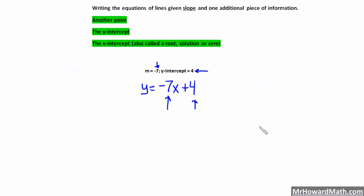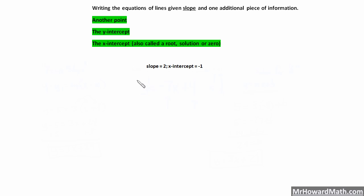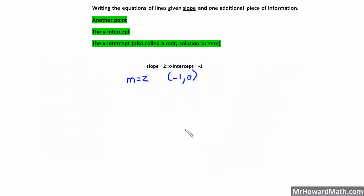Let's look at another example. We're given a slope of 2 and an x-intercept of negative 1. So m equals 2. The x-intercept of negative 1 is just a point — an ordered pair. It's where the line crosses the x-axis, which means y is 0 and x is negative 1. So it's the point negative 1, comma 0.